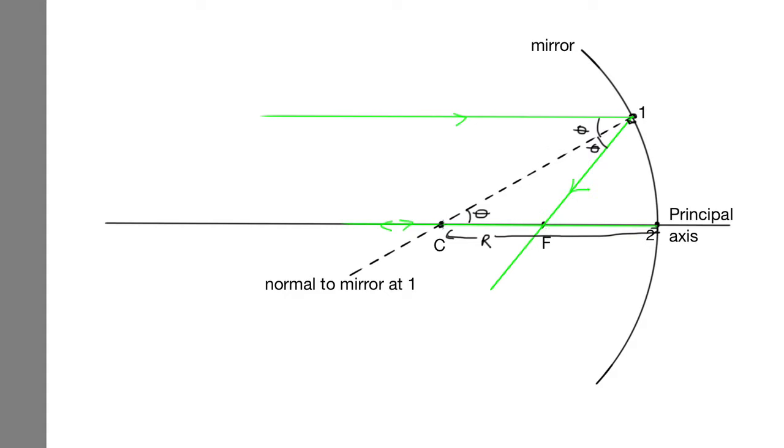So now, if we look at this triangle between C, which is our centre of curvature, F, our focus, and this point 1 here, we've got two angles which are both theta. So this is an isosceles triangle. And this side and this side are going to have equal lengths.